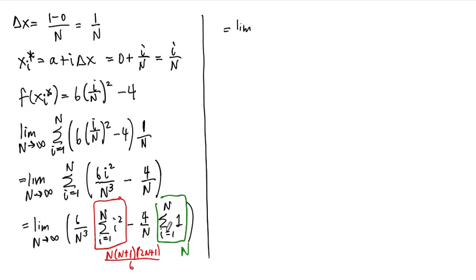So sum i goes from 1 to n of 1, i, i squared, i cubed. So look those up if you need to. We're almost done here. This is now the limit n approaches infinity. What's left after all this? This one becomes 6 times n times n plus 1 times 2n plus 1 all over 6 times n cubed minus, this one is just 4n over n.